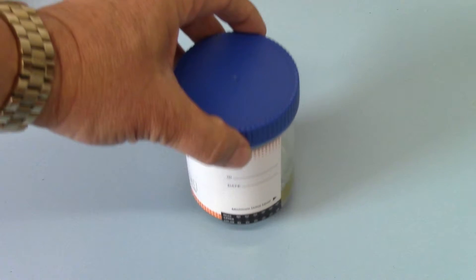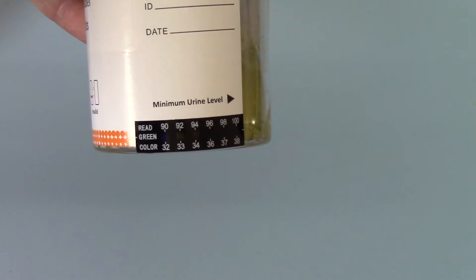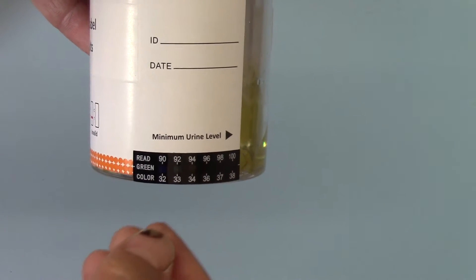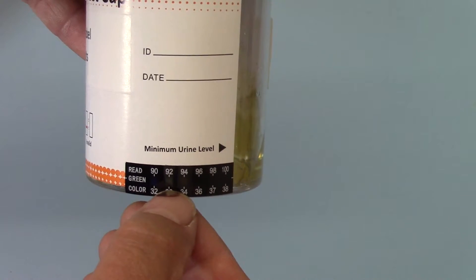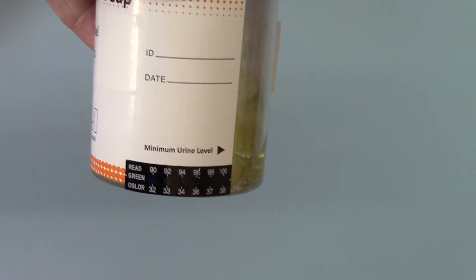Now the first thing to check on this when it comes back to the tester is the temperature. Now these are a little difficult to show on video, but you will see a greenish discoloration showing up between 90 and 92, going up to 94.